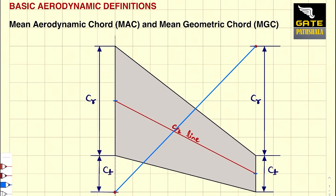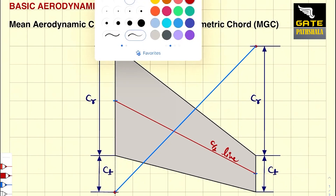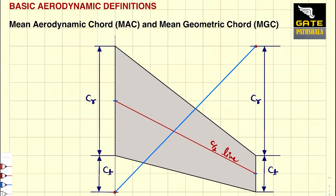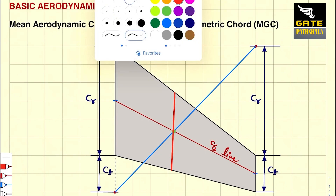So the point at which this line intersects the C/2 line is the point through which my mean aerodynamic chord passes. The mean aerodynamic chord is a line joining the leading edge and trailing edge which passes through this particular point. So this is my mean aerodynamic chord.